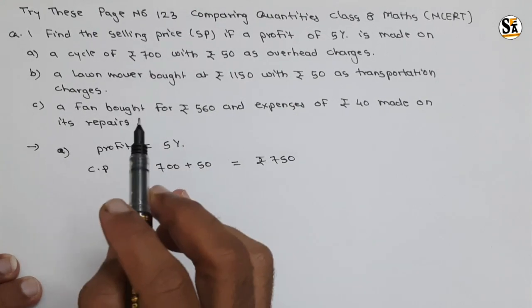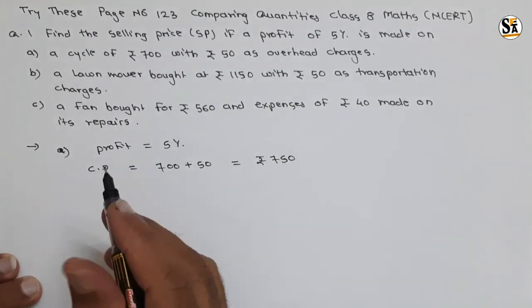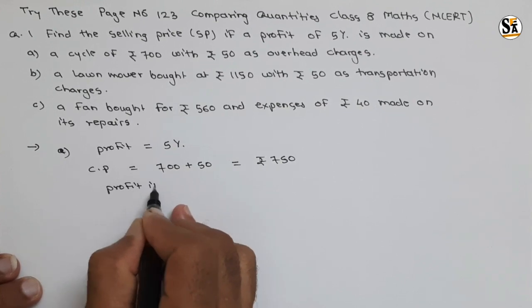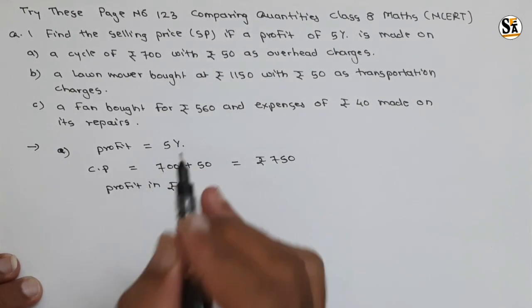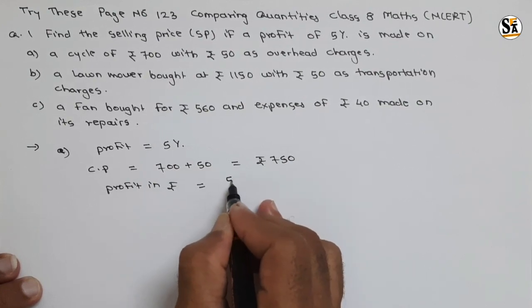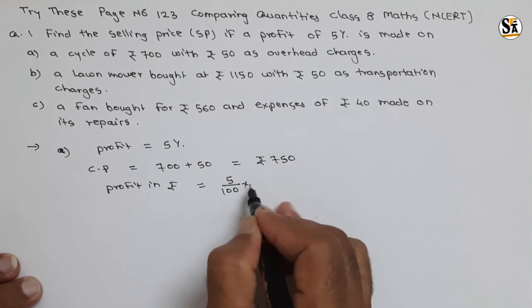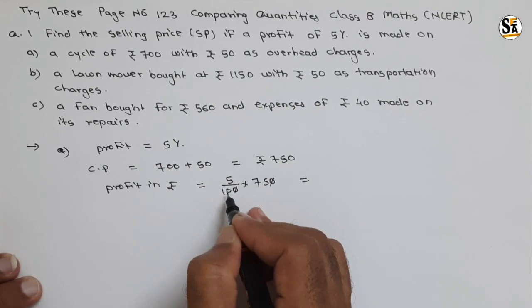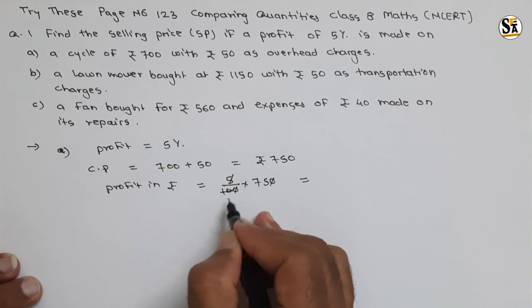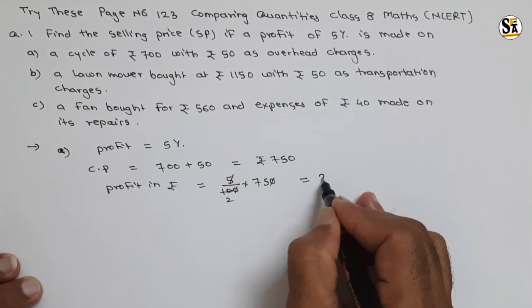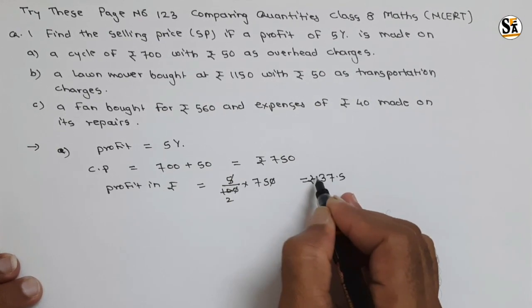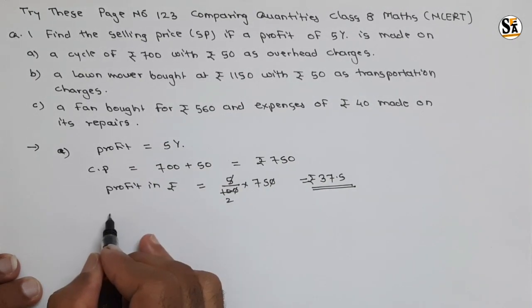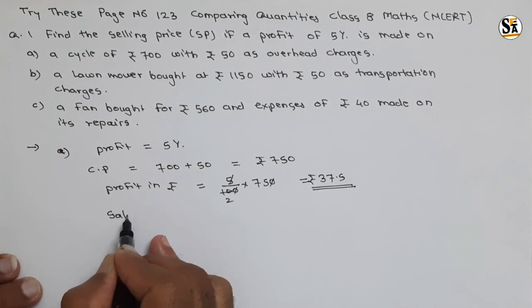Profit is always calculated on the cost price. So profit in rupees will be 5 divided by 100 into the cost price, that is 750. If we solve this: 5 divided by 100 into 750 gives us 75 divided by 2, which equals rupees 37.5. So profit in rupees is 37.5.